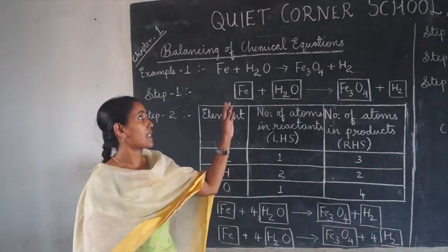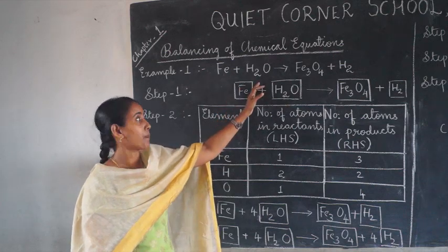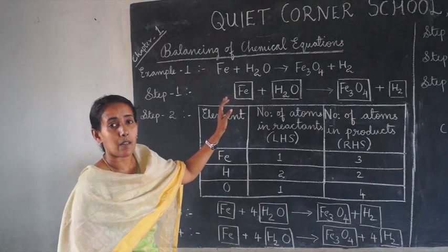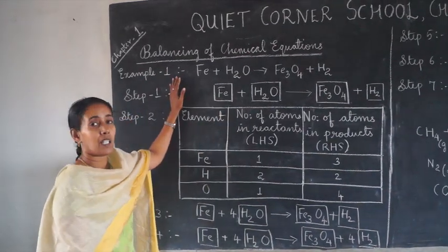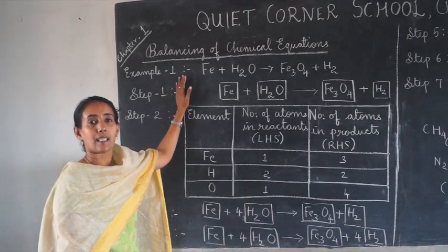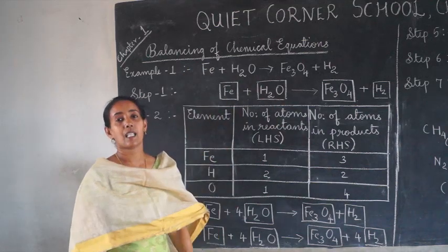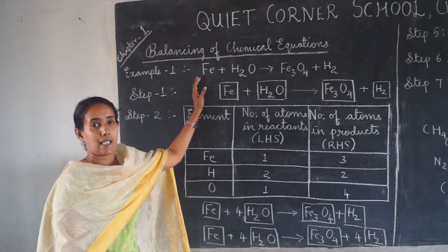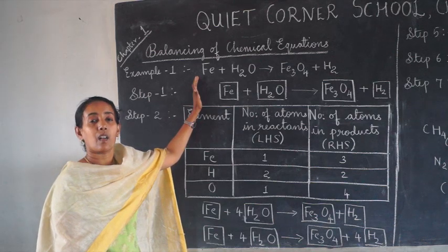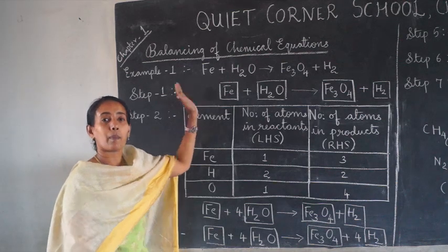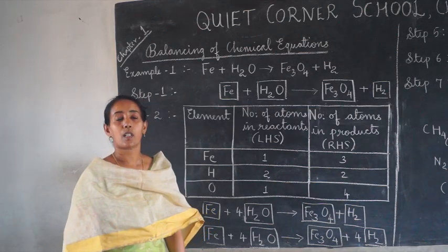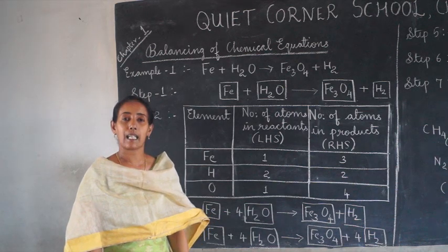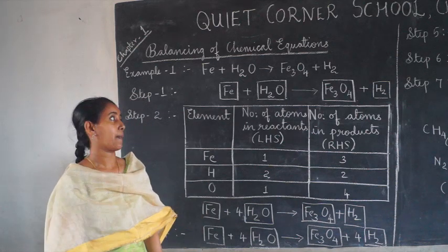Now we will take the example of iron reacting with water in the form of steam to form iron oxide Fe₃O₄ plus hydrogen. There are certain steps involved in balancing chemical equations. Chemical equations should be balanced to satisfy the law of conservation of mass, which means the total number of atoms on the reactant side should be equal to the total number of atoms on the product side.